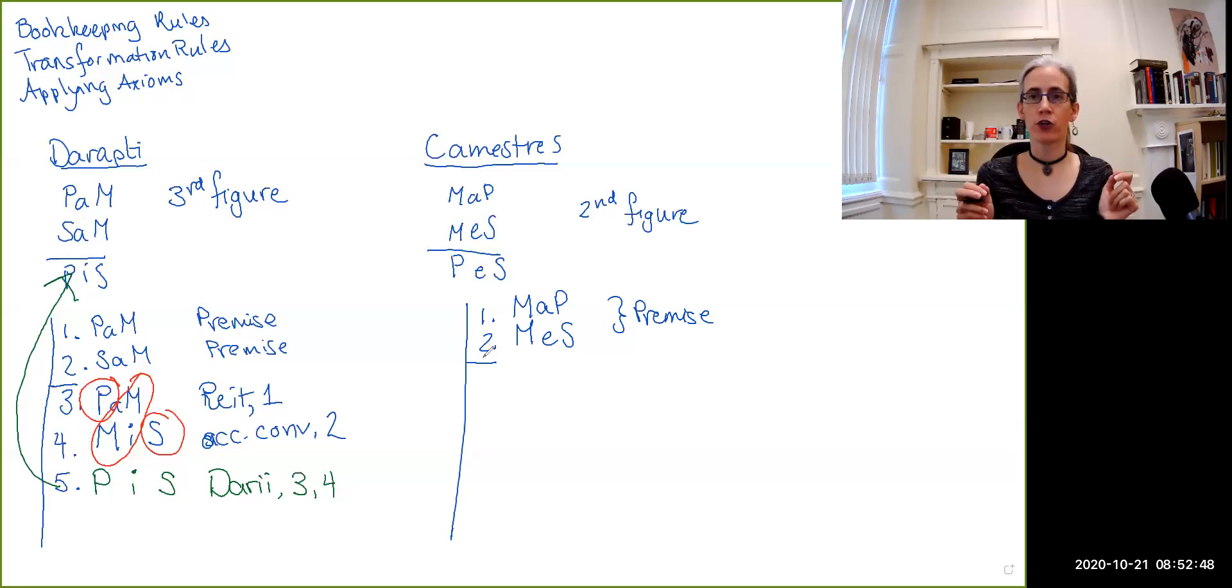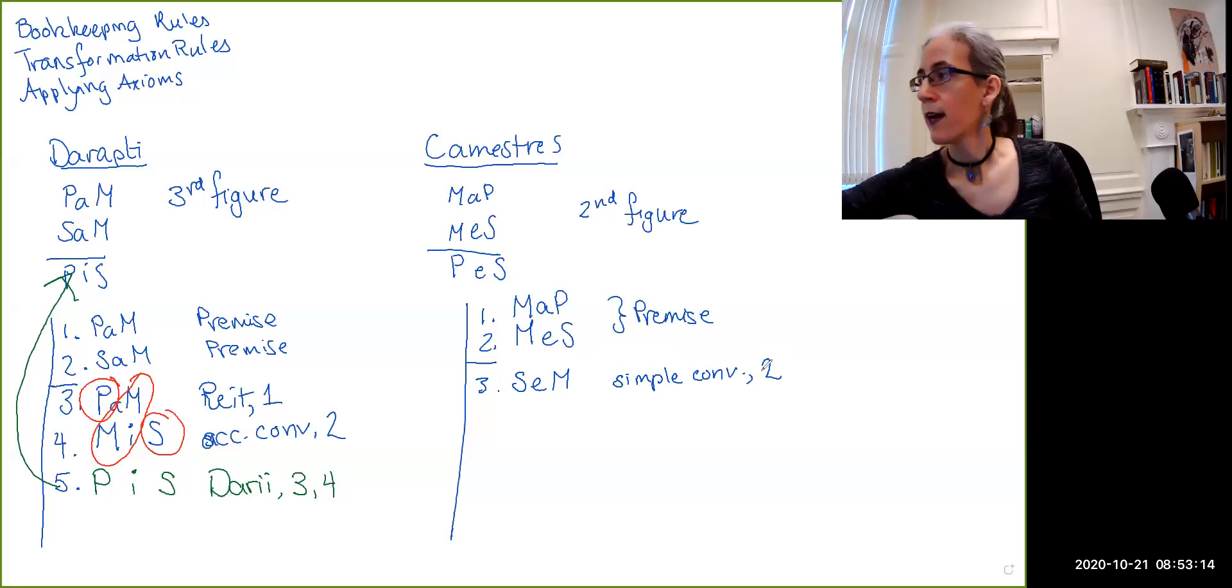The first thing that I'm going to do is try to rearrange terms so that I get something—again, two pairs of propositions that are in the first figure. So first I'm going to do simple conversion on this e claim. So simple conversion just is swap the order of the terms, don't do anything else. So simple conversion on line two gets us SeM.